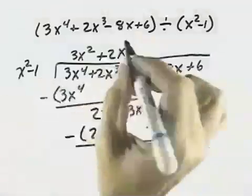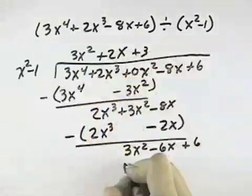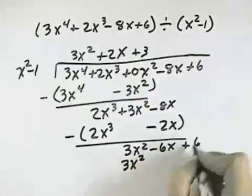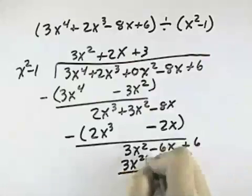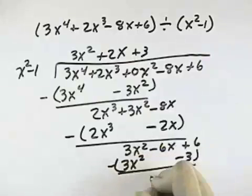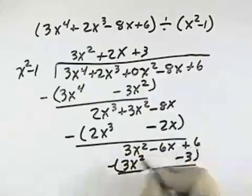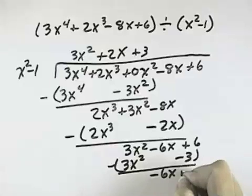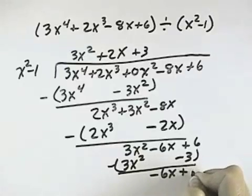x squared goes into 3x squared 3 times, so it's plus 3. Multiply, and I get 3x squared minus 3. Subtracting, the x squared's cancel. I have the negative 6x, and 6 minus a negative 3 becomes plus 3, which makes it plus 9.